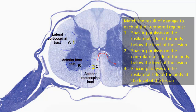The anterior horn cells at B are lower motor neurons — the origin of motor fibers passing through the anterior roots of the spinal nerve. Lesion affecting these cells, for example in poliomyelitis, results in flaccid paralysis ipsilateral to the lesion, affecting only muscles supplied by the segment involved.